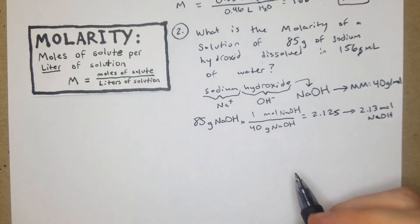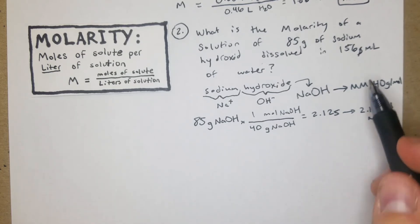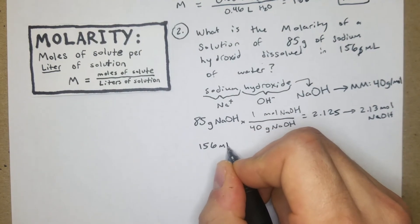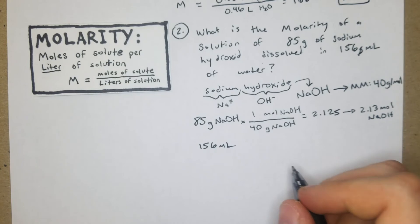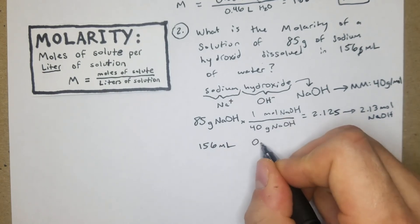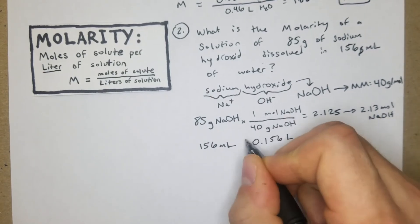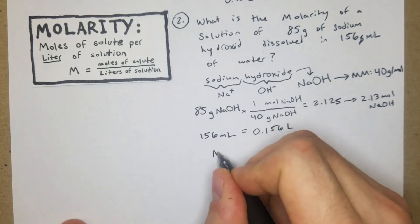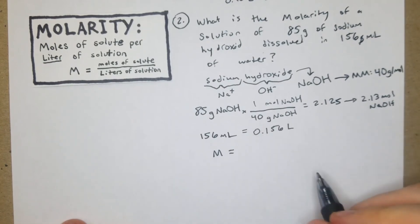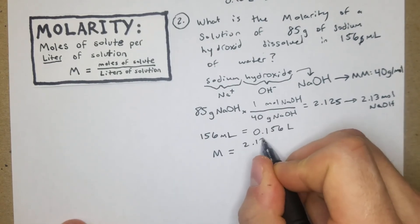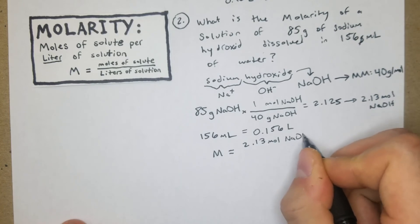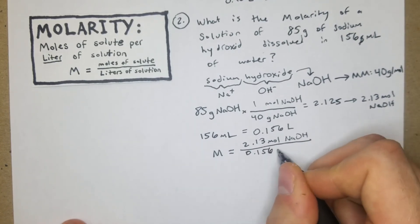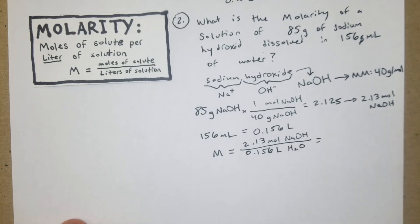Now that you have moles, you can just plug it right into the formula. However, in this case we have 156 mL. So really quick, 156 mL is just - we move it over 3, so it's going to be 0.156 liters. Now we can plug it into the formula: M equals the moles of solute, which we just calculated to be 2.13 moles of NaOH, divided by 0.156 liters of water.